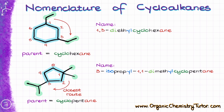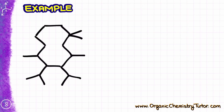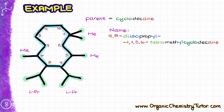It doesn't really matter how big or complex the molecule is — for as long as you follow these rules, you'll be able to name anything, or at least almost anything until you learn more rules. Even though we're going to be adding more rules and increasing molecular complexity, the fundamentals are still going to be the same. For instance, this molecule will be called 4,5-diisopropyl-1,1,3,6-tetramethylcyclodecane.